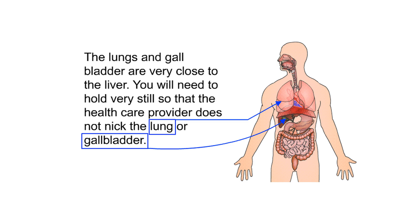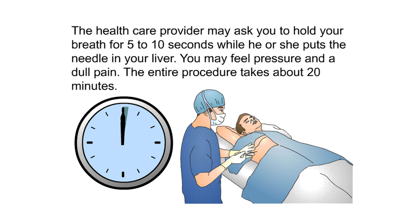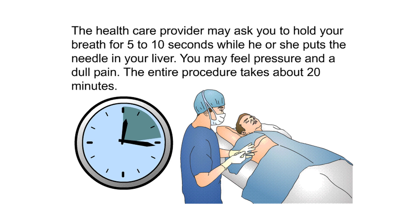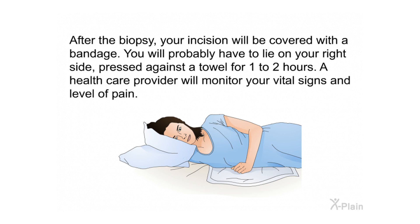The lungs and gallbladder are very close to the liver, so you will need to hold very still so that the health care provider does not nick the lung or gallbladder. The health care provider may ask you to hold your breath for five to ten seconds while inserting the needle. You may feel pressure and a dull pain. The entire procedure takes about 20 minutes. Afterward, your incision will be covered with a bandage, and you will probably lie on your right side pressed against a towel for one to two hours while a health care provider monitors your vital signs and level of pain.